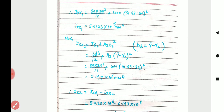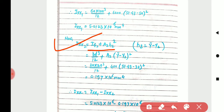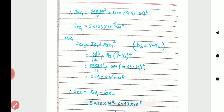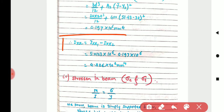Similarly, Ixx2 = Ig2 + A2·h2², where h2 = y-bar − y2 (take the absolute difference). Ig2 = b·d³/12 for the square section. Substituting values: Ixx2 = 0.197 × 10⁶ mm⁴. Therefore, total Ixx = Ixx1 − Ixx2, giving the overall moment of inertia = 4.926 × 10⁶ mm⁴.